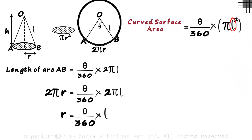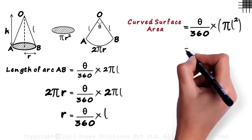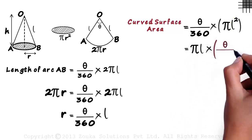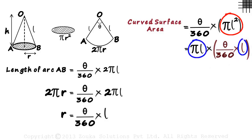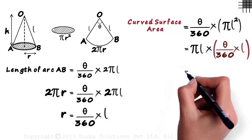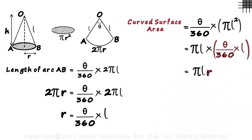Can we write this a bit differently? Yes! This can also be written as pi L multiplied by theta by 360 multiplied by L. We have just split pi L squared into pi L multiplied by L. But this part in brackets as we just found out is equal to R. So the curved surface area will be pi L multiplied by R. Let us review what we just did.